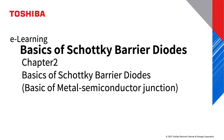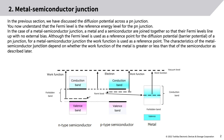Metal-semiconductor junction: In the previous section, we discussed the diffusion potential across a PN junction. You now understand that the Fermi level is the reference energy level for the PN junction. In the case of a metal-semiconductor junction, a metal and a semiconductor are joined together so that their Fermi levels line up with no external bias.